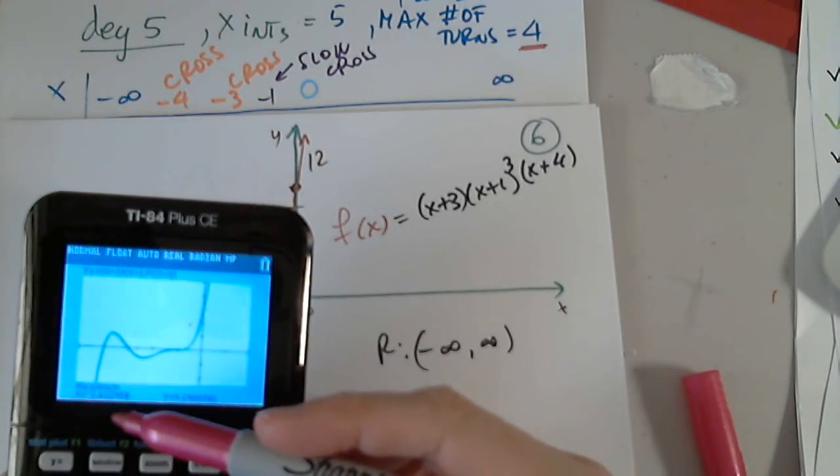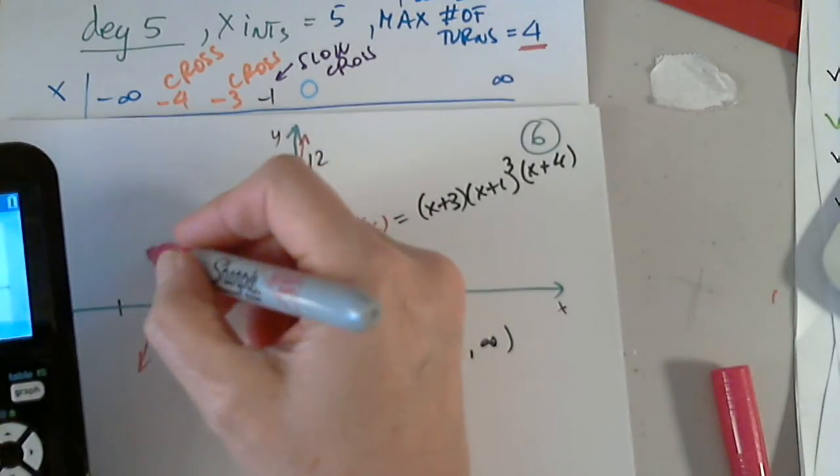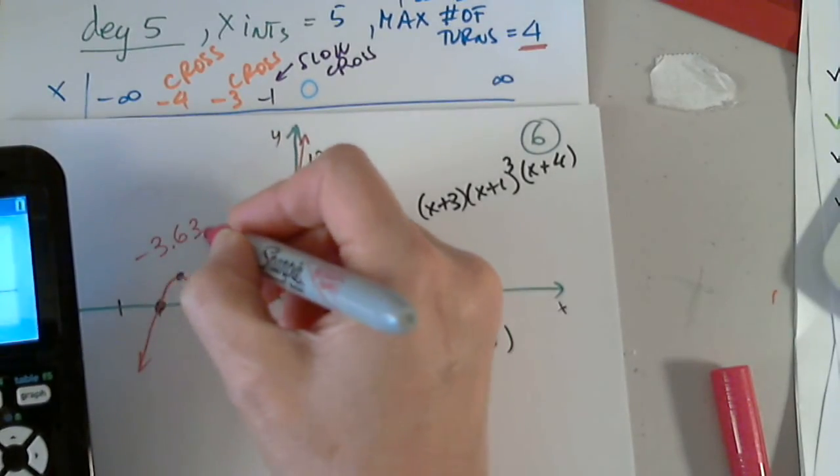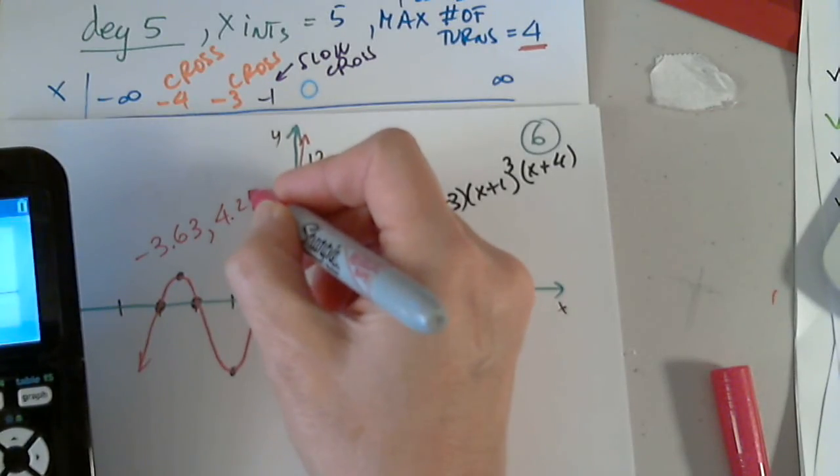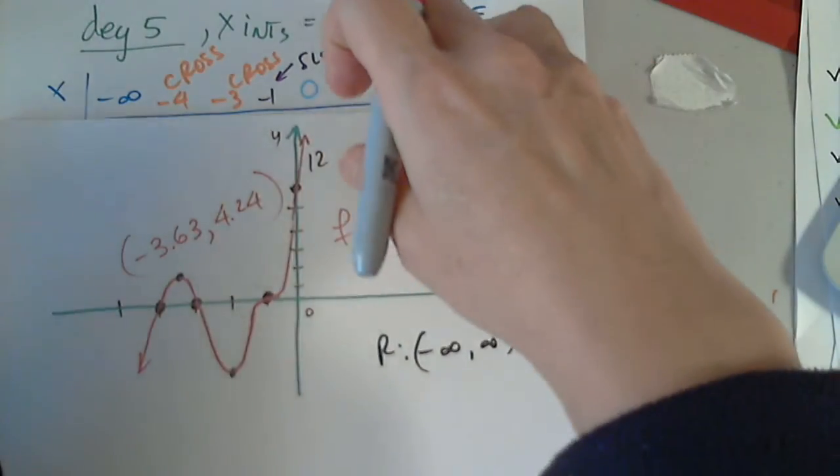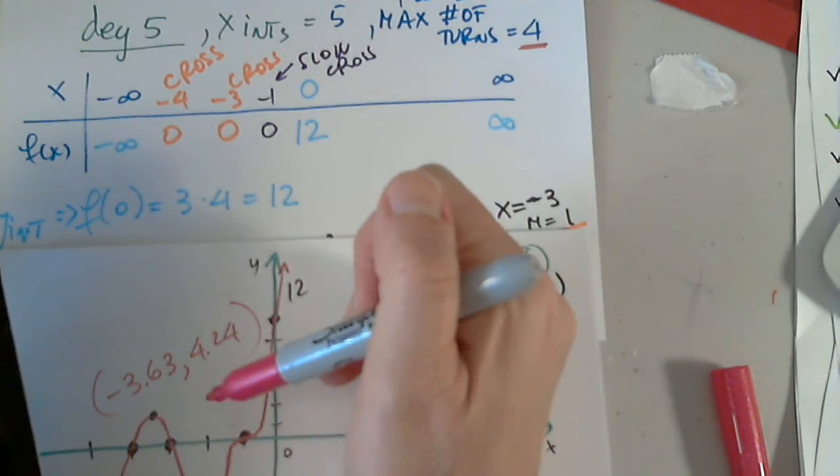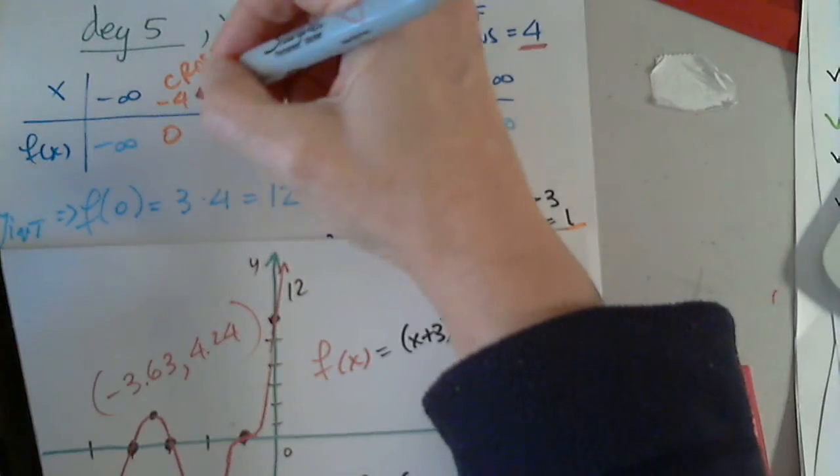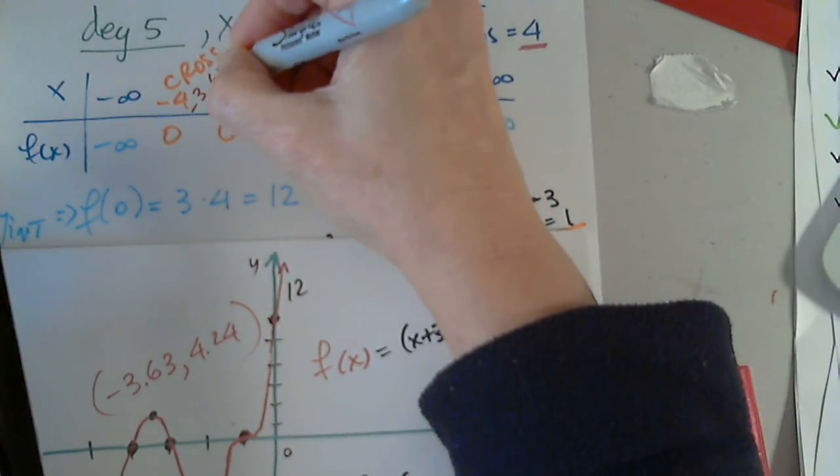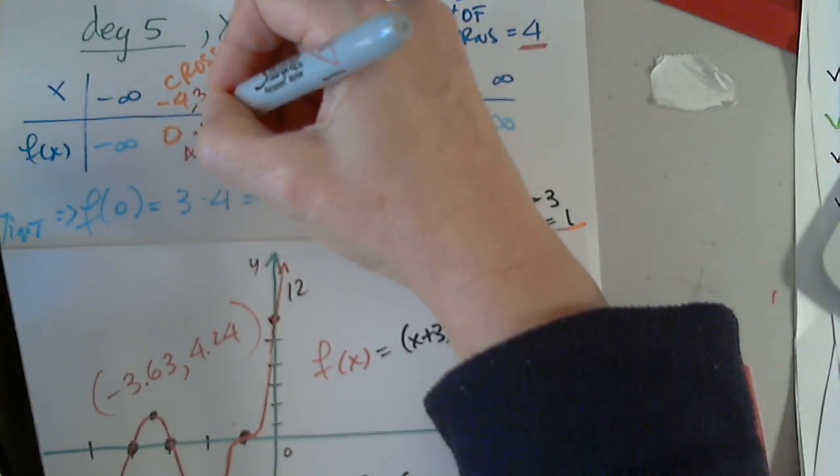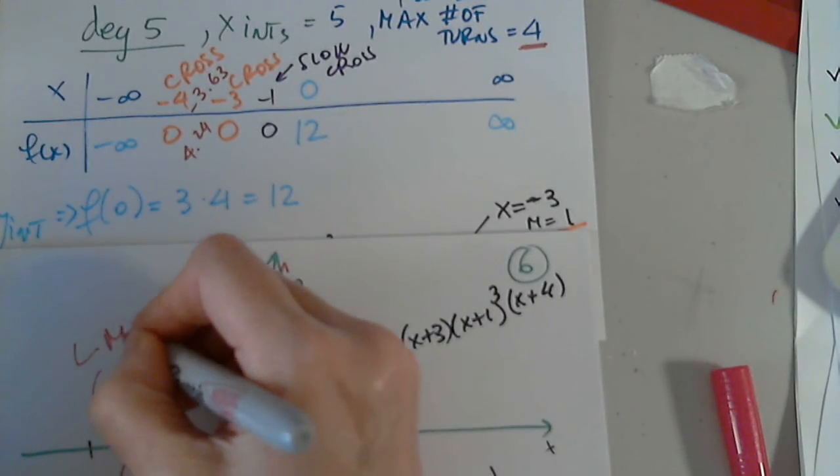So this is negative 3.63, comma, 4.24. Go back to my table. I didn't leave enough room here. So it's kind of difficult to squeeze it in, but I will. So negative 3.63 and 4.24. And this is a local max.